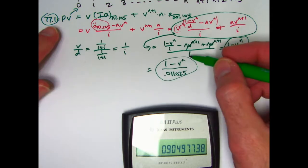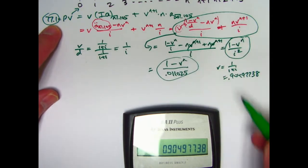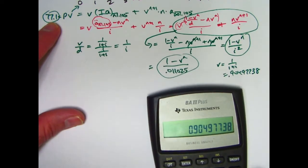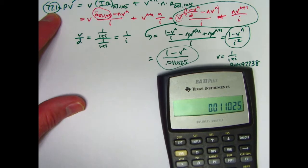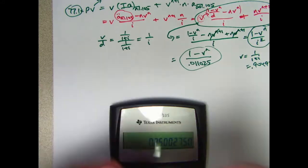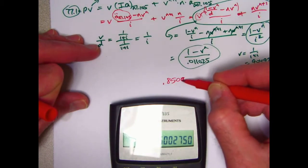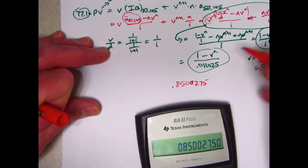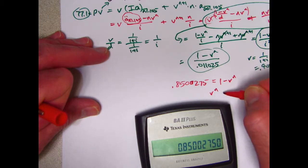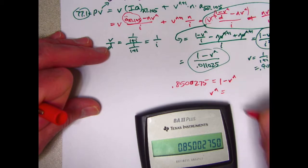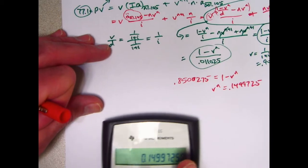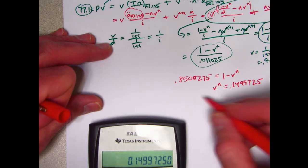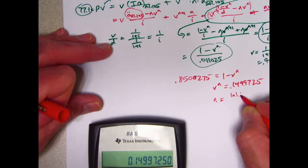So, again, I'm focused on this equaling that. I'll multiply both sides by 0.011025. So I get 77.1 times 0.011025. That gives me, let's use another color here, 0.8500275. 0.011025 equals 1 minus V to the N. So V to the N is 1 minus that. V to the N is going to be 0.1499725. Take the natural log of both sides. Use the fact that the exponent of the N can be brought in front. N is going to end up being the natural log of 0.1499725 divided by the natural log of V.